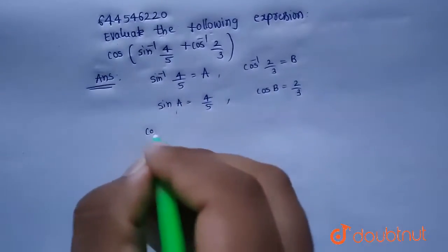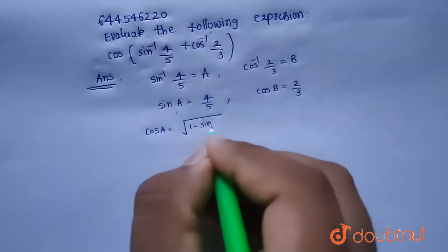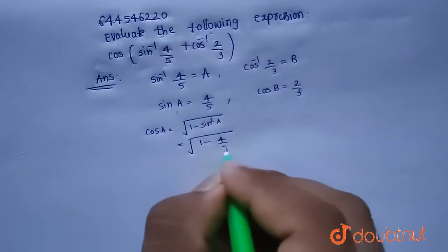Now we know that cos a is root over 1 minus sin square a. So from this it will be equals to root over 1 minus 4 by 5 whole square.